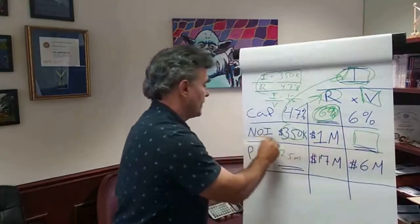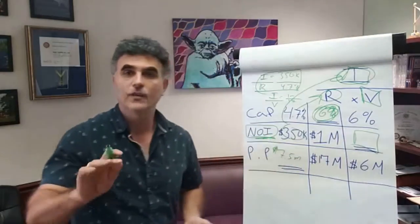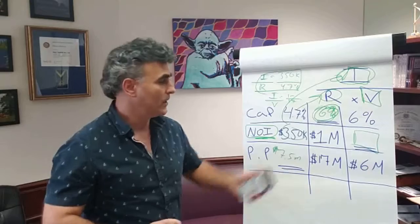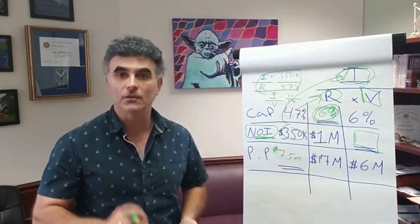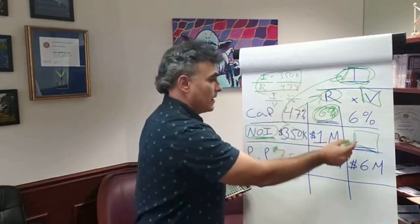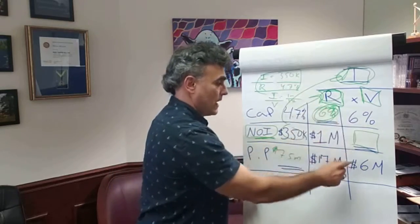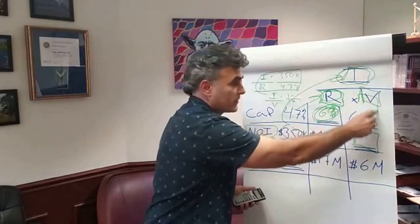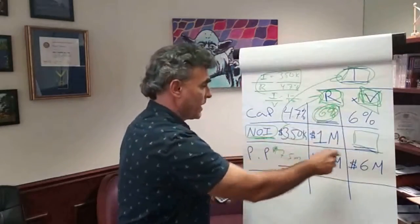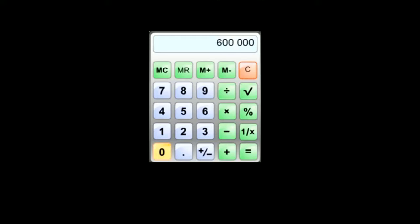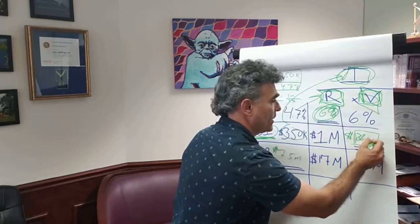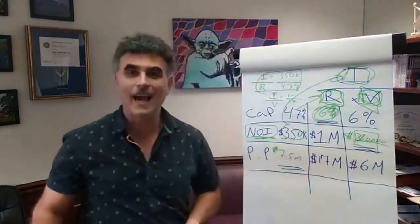Let's do this one right here. Here we're solving for the NOI of a property when we're given these two values. We have the cap rate and we have the purchase price, so we just multiply the two. We have $6 million times a 6% cap, and that gives us an NOI of $360,000.